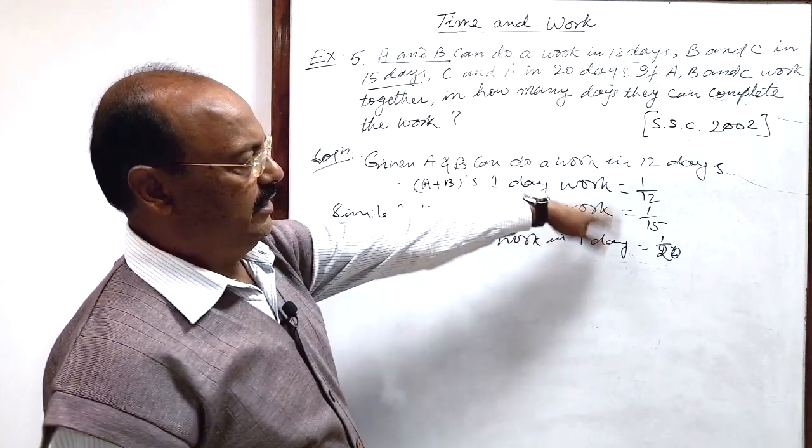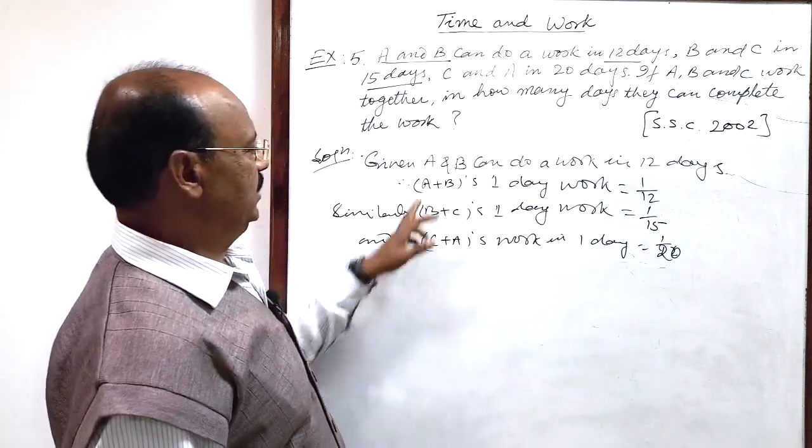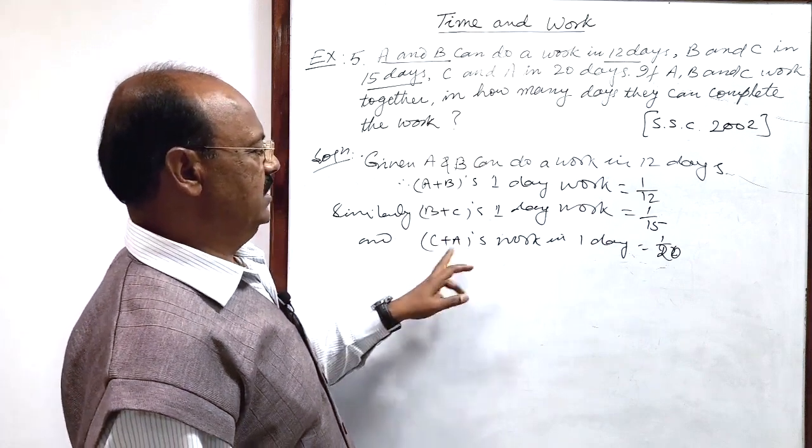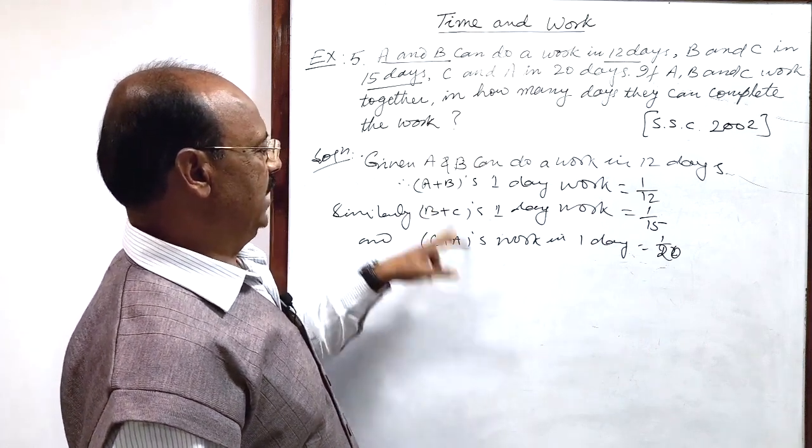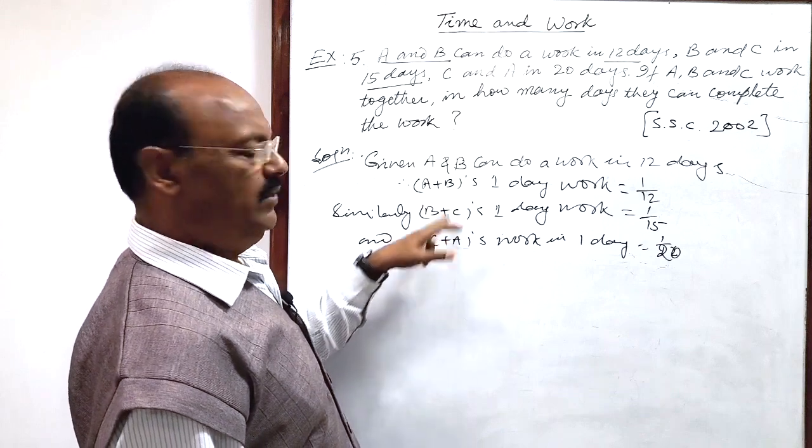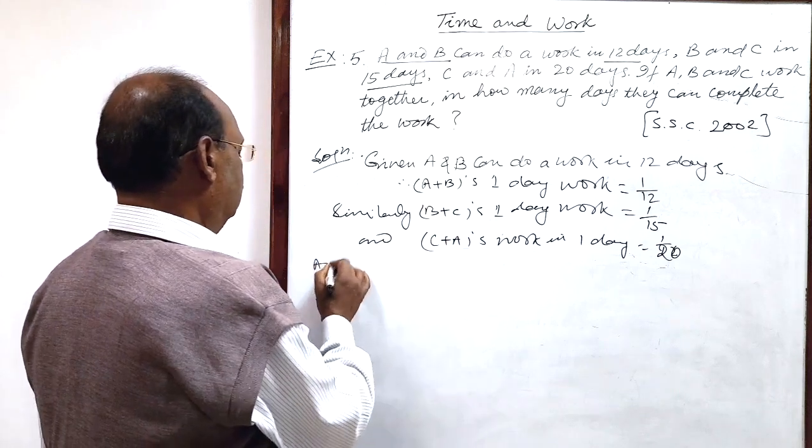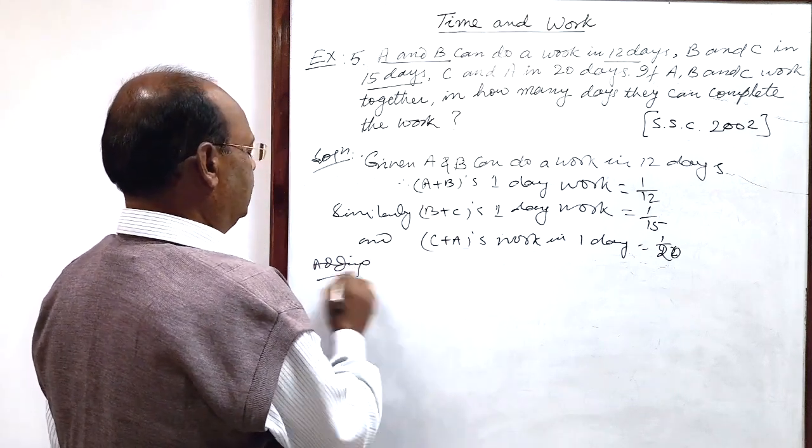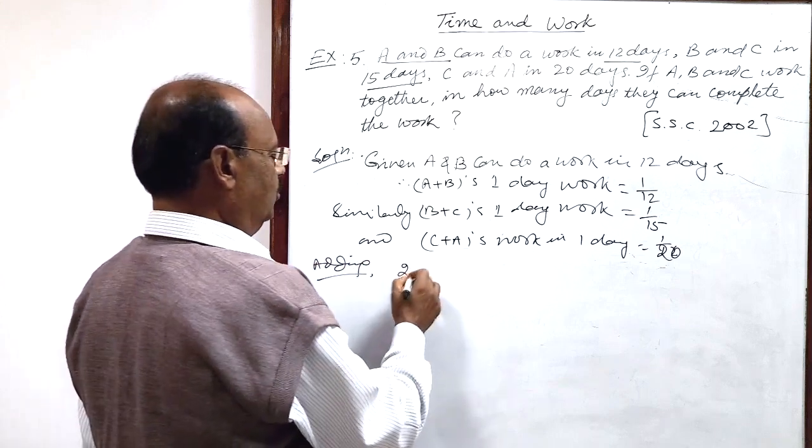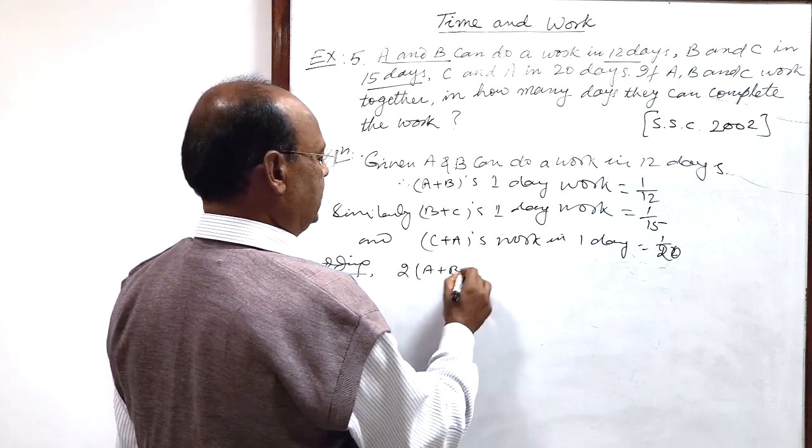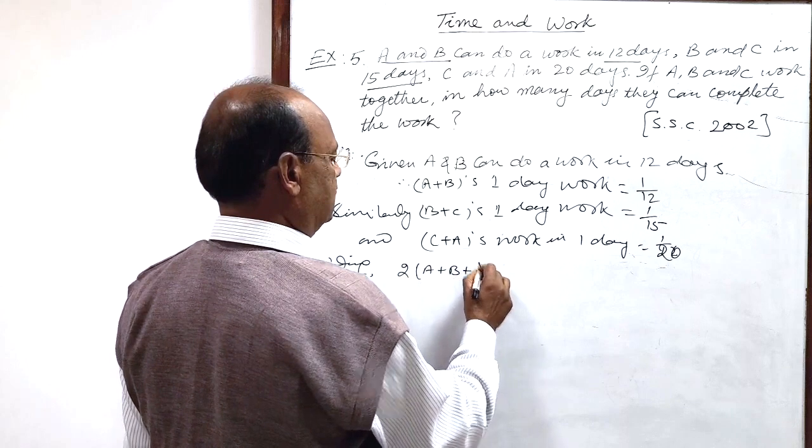If we add these three quantities, then you see A plus B, B plus C, C plus A. A will be two times, B will be two times, as well as C will be two times. So on adding these relations, we get two times of A plus B plus C's one day work.